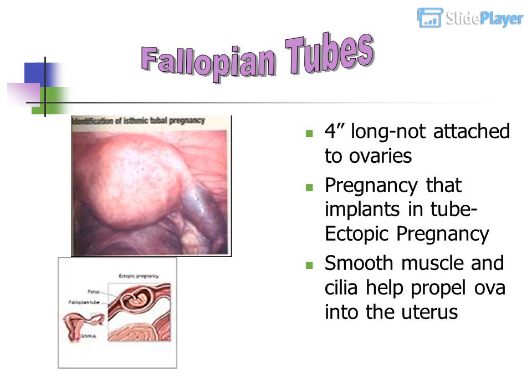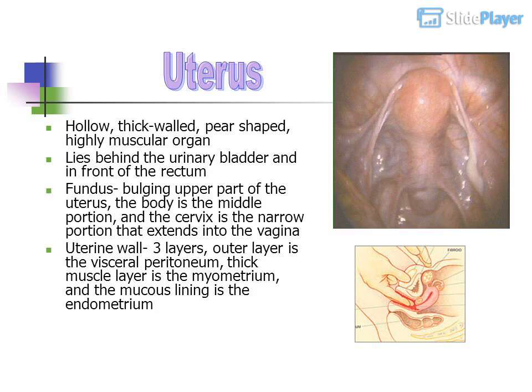Fallopian tubes are long and not attached to the ovaries. A pregnancy that implants in the tube is called an ectopic pregnancy. Smooth muscle and cilia help propel the ovum into the uterus.